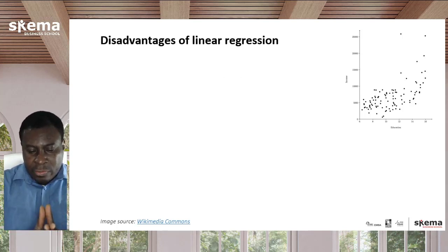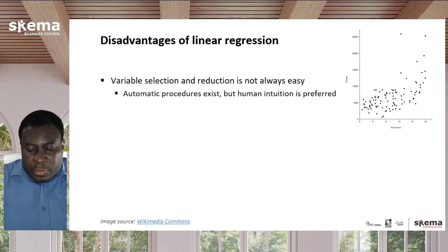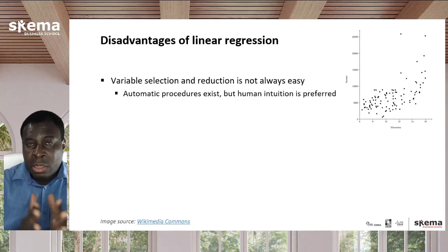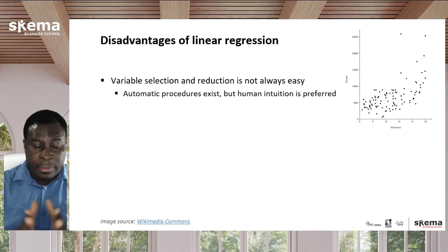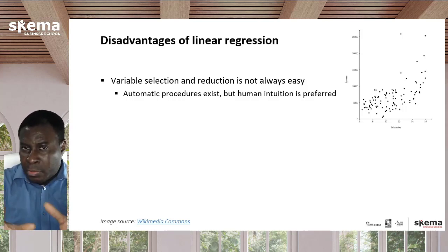For that I need to explain the disadvantages, the shortcomings of linear regression. One of the first issues is that variable selection and reduction is not so easy. If you have maybe 20 variables and you give them to a linear regression equation, it gets confused — they'll try to use them, some will contradict each other, and the results would not be so good and definitely not very clear. So it's best to just use the few variables, maybe five or six, that you know are really more relevant.